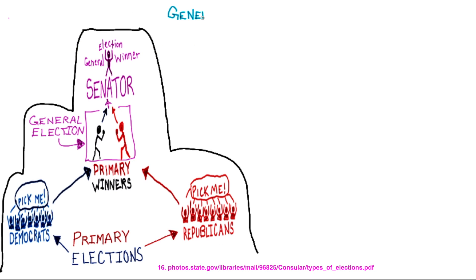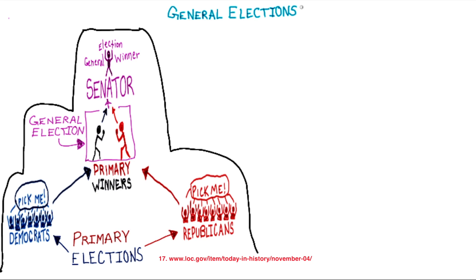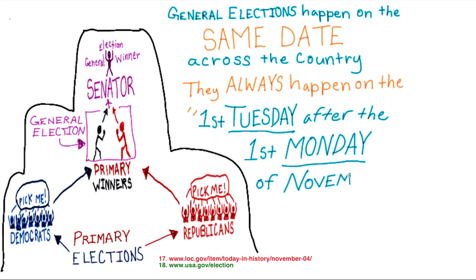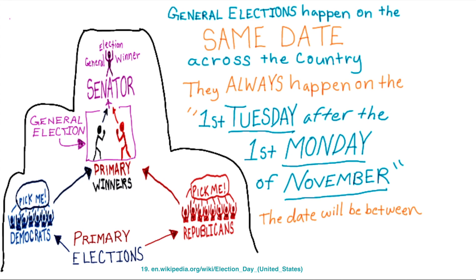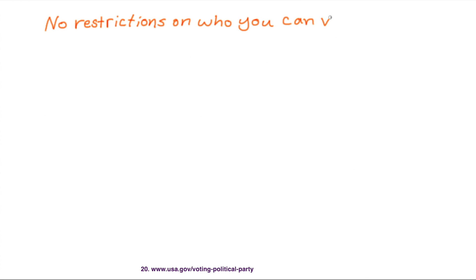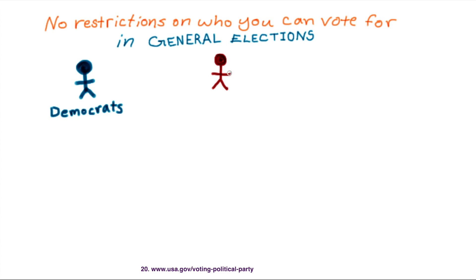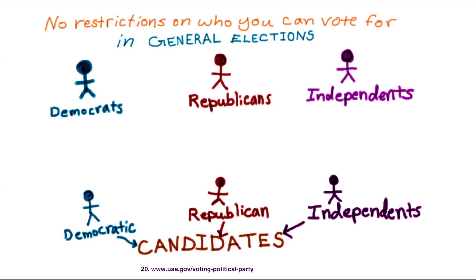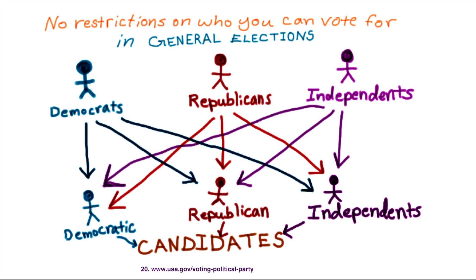After primary elections are completed, the general election happens. In this election, the final candidates are chosen for each office. Unlike primaries, the general election happens on the same date across the country by federal law since 1845. General elections are always held on the first Tuesday after the first Monday of November. So the exact date will change from year to year, but it will always be between November 2nd and November 8th. In 2020, the general election was on November 3rd. In a general election, you don't have to be a member of any political party in order to vote, and if you are a member, you can vote for a candidate in your own party, another party, or for an independent candidate.